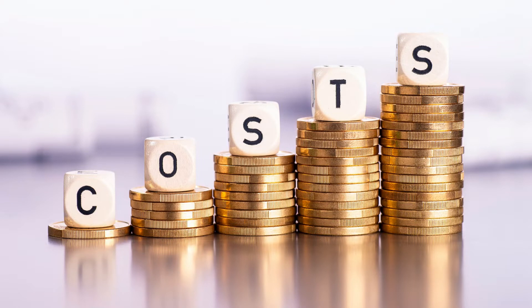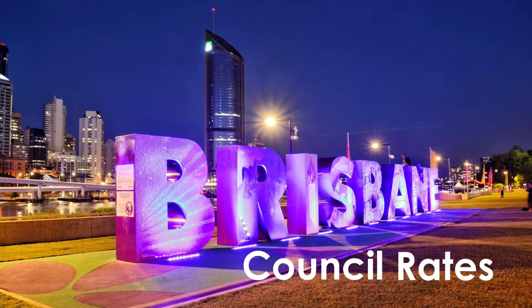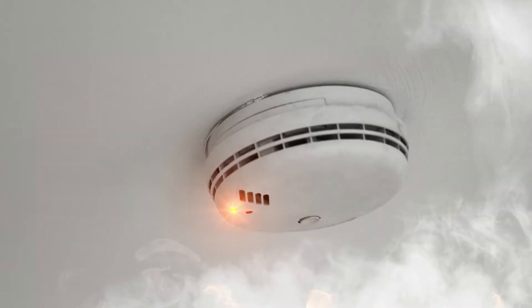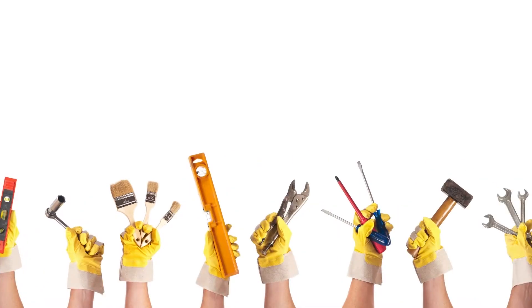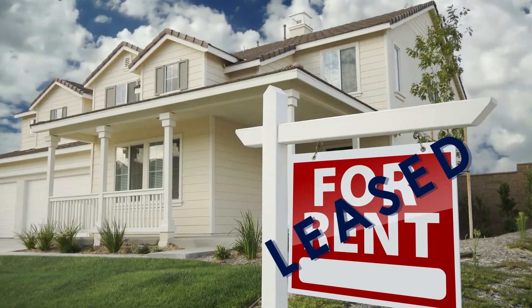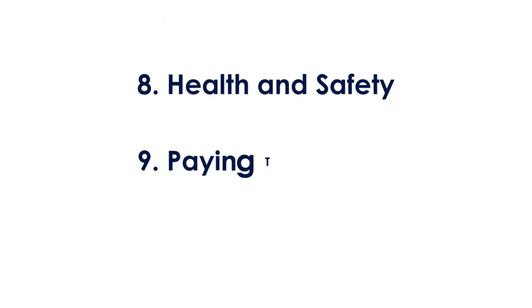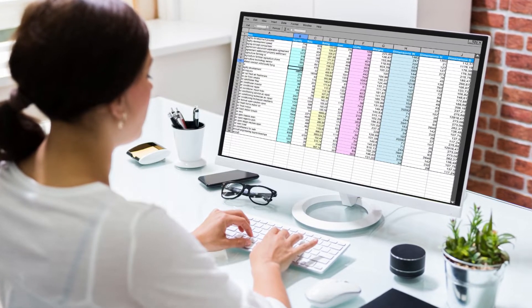The following are the costs you typically need to allow for: number one, mortgage payments; two, landlord building and public liability insurance; three, rates and levies; four, smoke alarm compliance; five, renovations and decorating; six, maintenance and repairs; seven, letting agency fees; eight, health and safety; nine, paying taxes; ten, finding tenants.